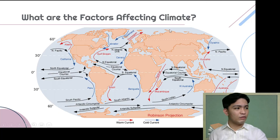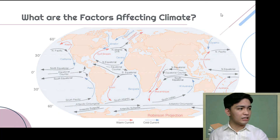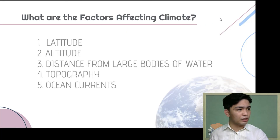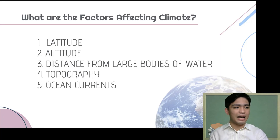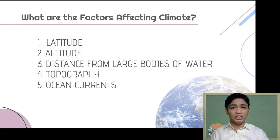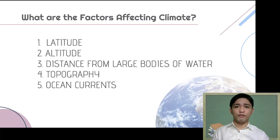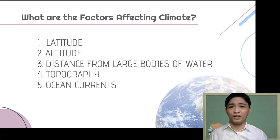So far, we were able to discuss the different factors affecting the climate of an area: latitude, altitude, distance from large bodies of water, topography, and ocean currents.